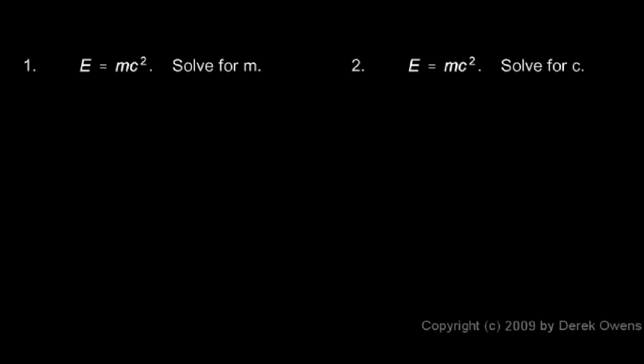A nuclear reactor can produce a tremendous amount of energy from a very small amount of mass. Because when you multiply the M by this gigantic number, C squared, you get an absolutely huge amount of energy.